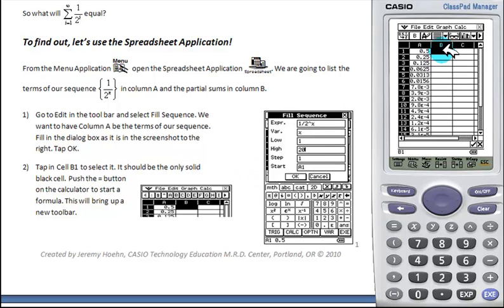We want to select cell B1, and we're going to start by entering a formula. Formula being the sum of all of our terms. In order to start a formula, we're going to push equals and we'll see a toolbar changes.